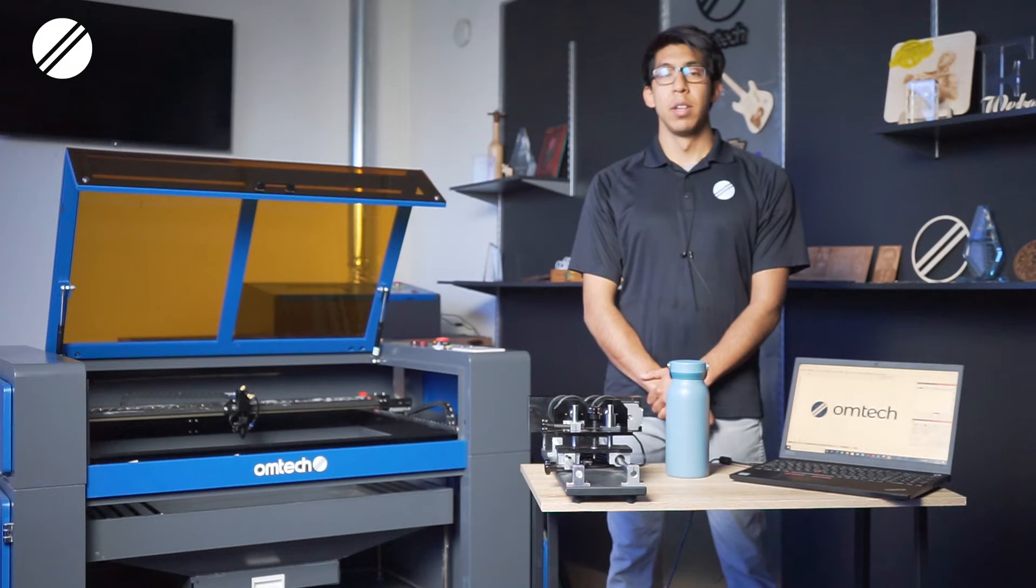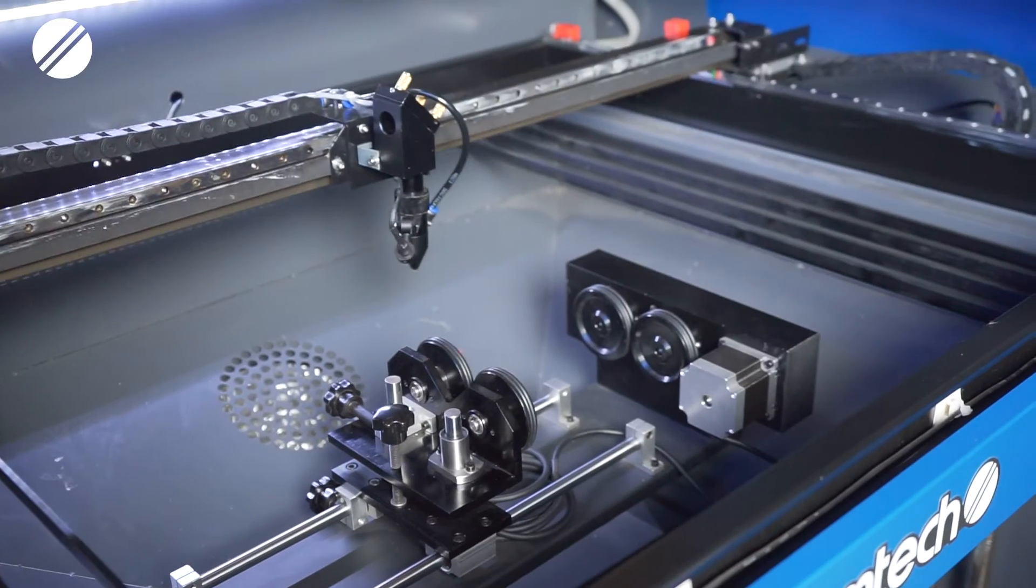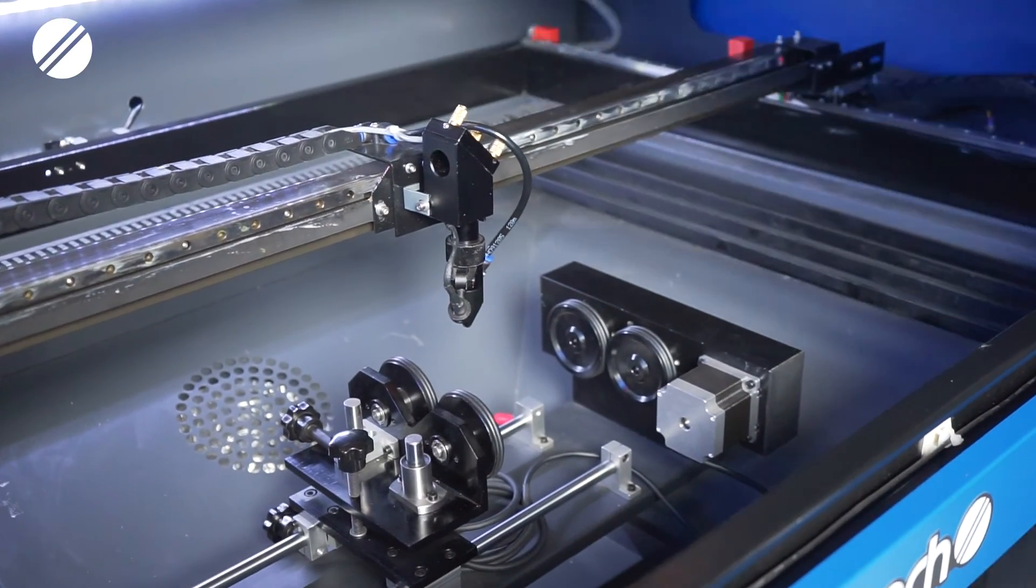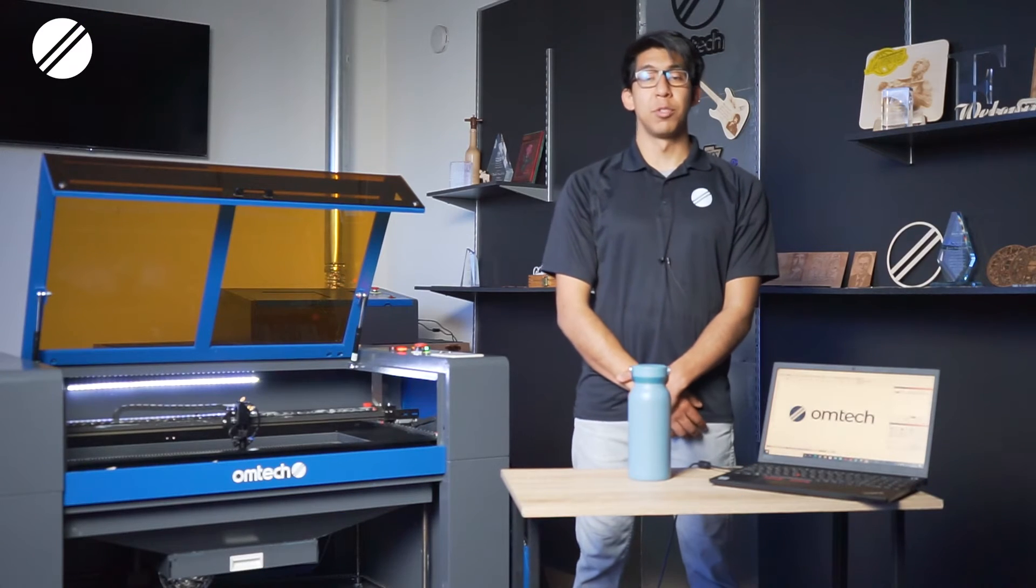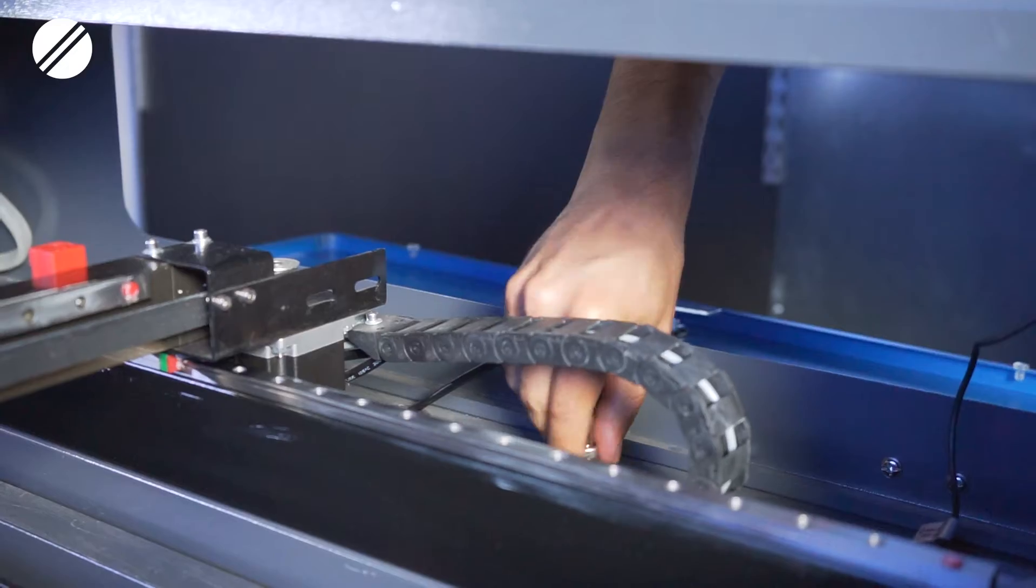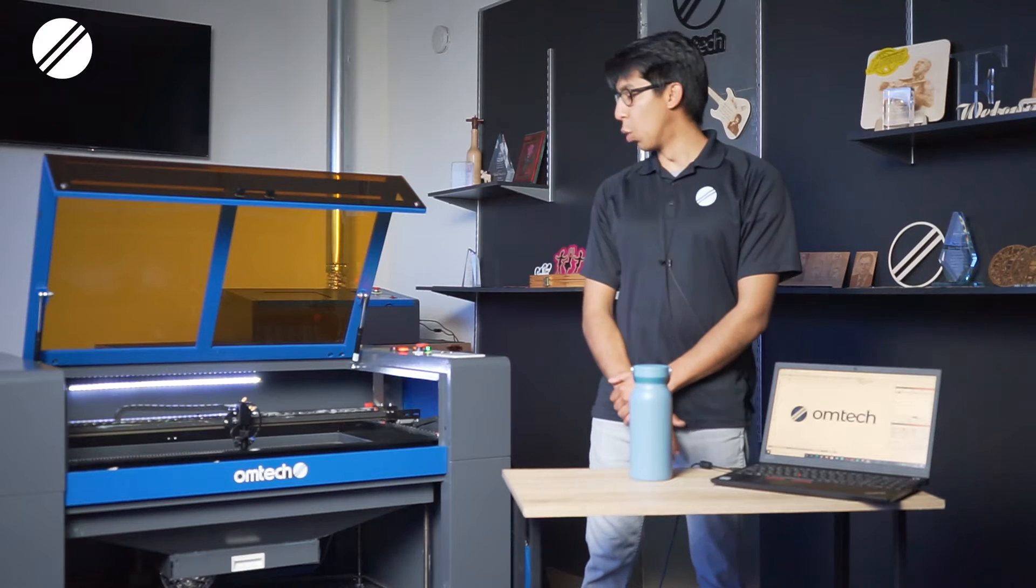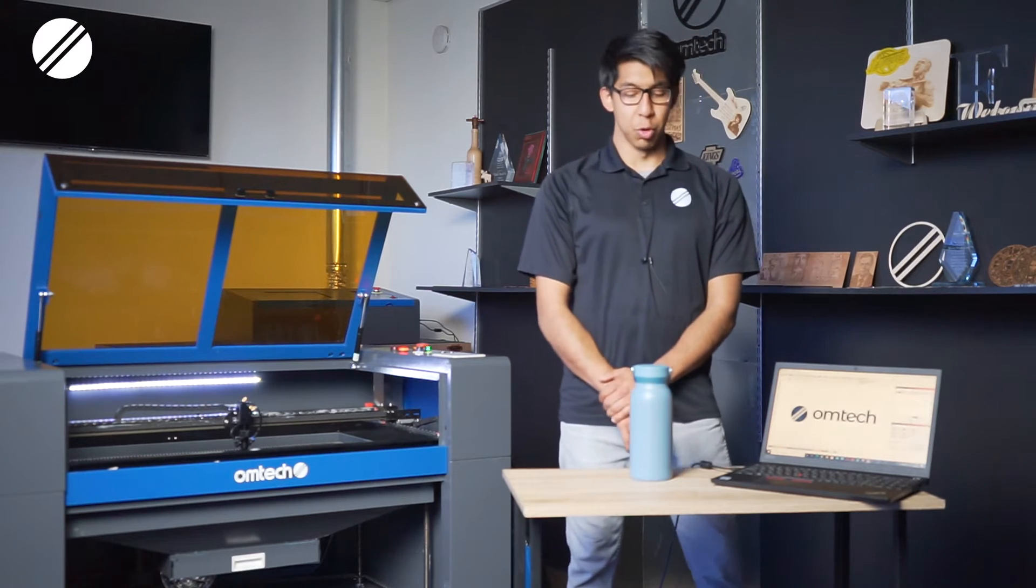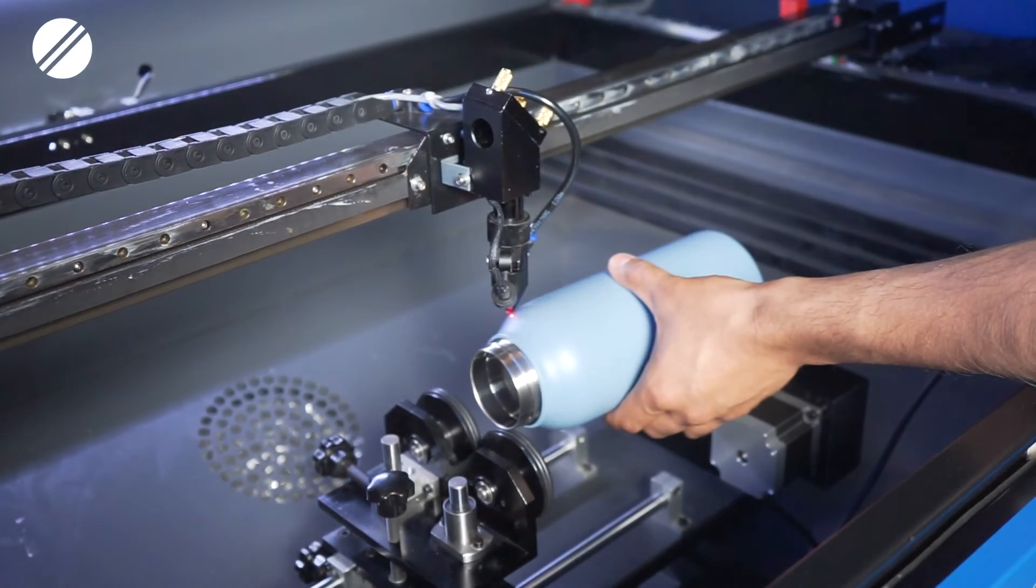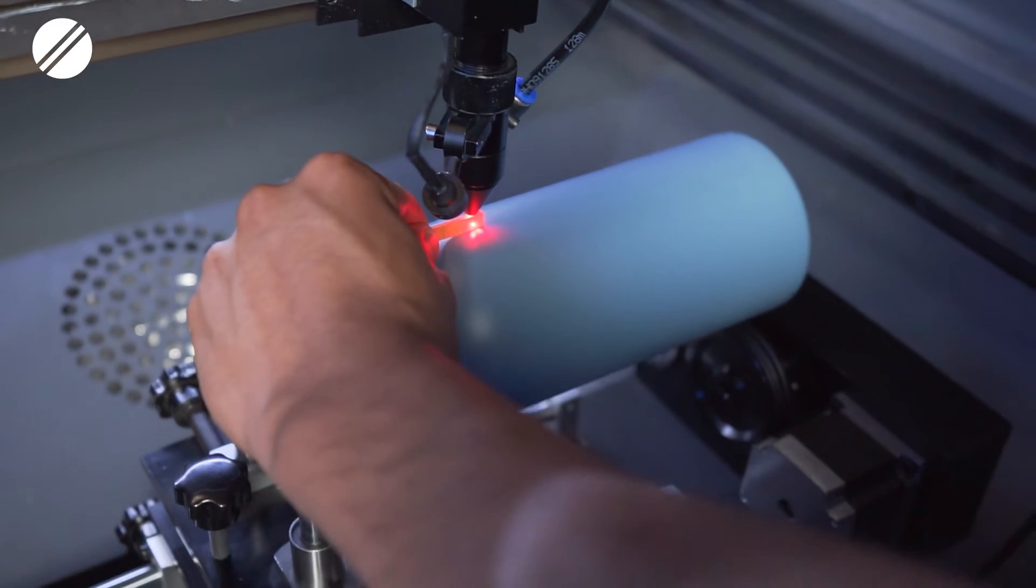You need to make sure that before you disconnect the y-axis and connect the rotary device, you place the laser head on the center line of the four-wheel rotary device. Once you have positioned your laser head towards the center line, disconnect the y-axis, connect the rotary device, then lower the bed to place your tumbler of your desired size into the rotary device, and focus your laser onto the tumbler.